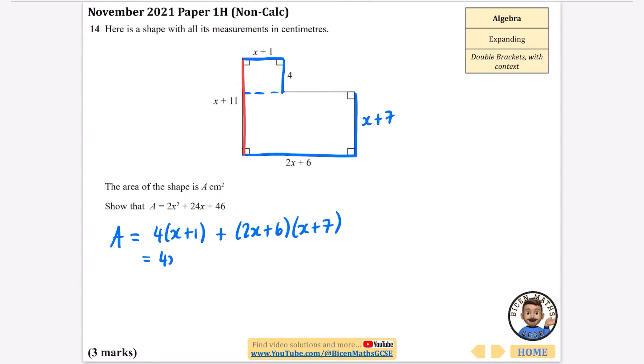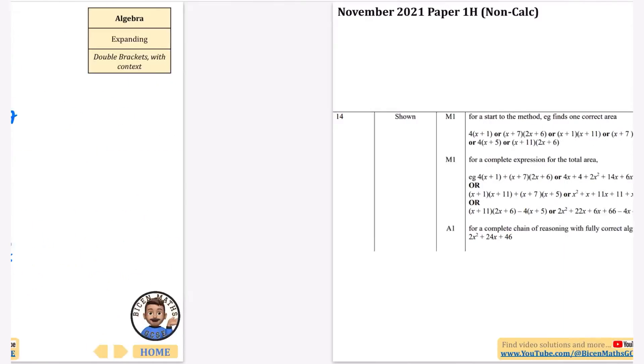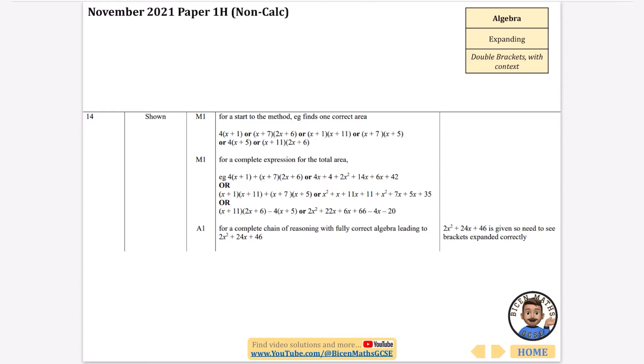So what we need to do is expand those first brackets to get 4x plus 4 and then in the second brackets 2x times x is 2x squared. 2x times 7 is 14x. 6 times x is 6x and 6 times 7 is 42. So I'm going to begin with the 2x squared. Now I'm going to look at what x terms I've got. I've got a 4x, a 14x and a 6x. That is 24x and I have a 4 and a 42 which gives me 46. So I've shown that that is what the area is equal to.